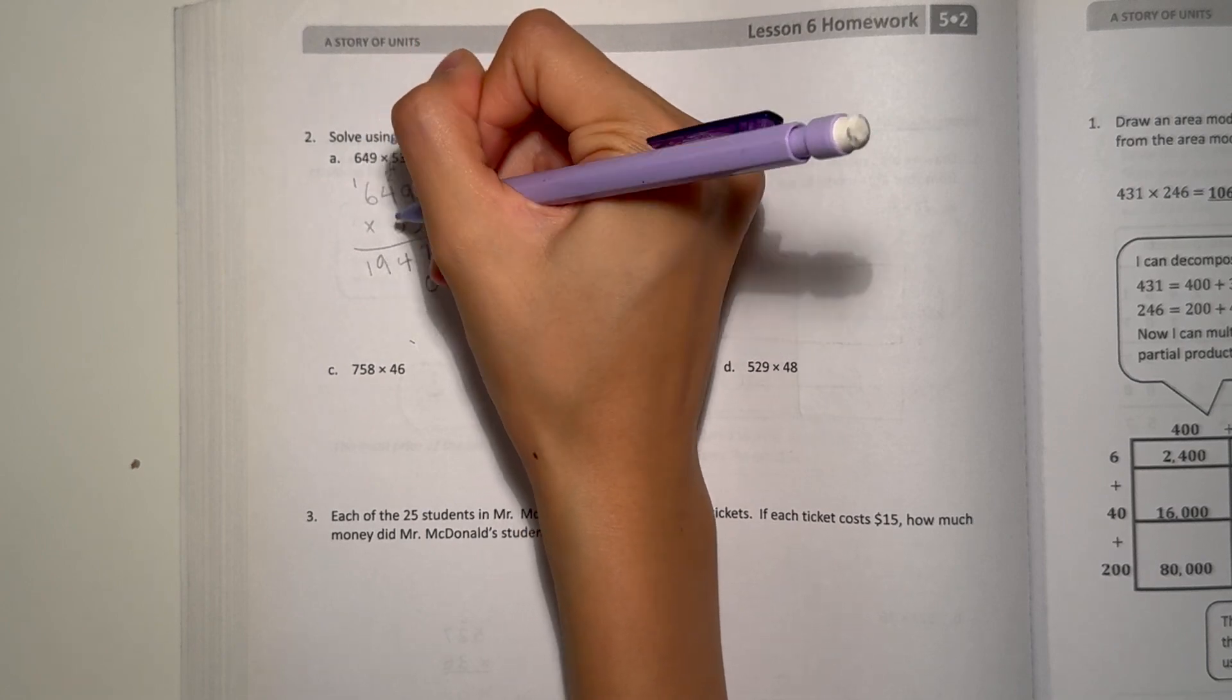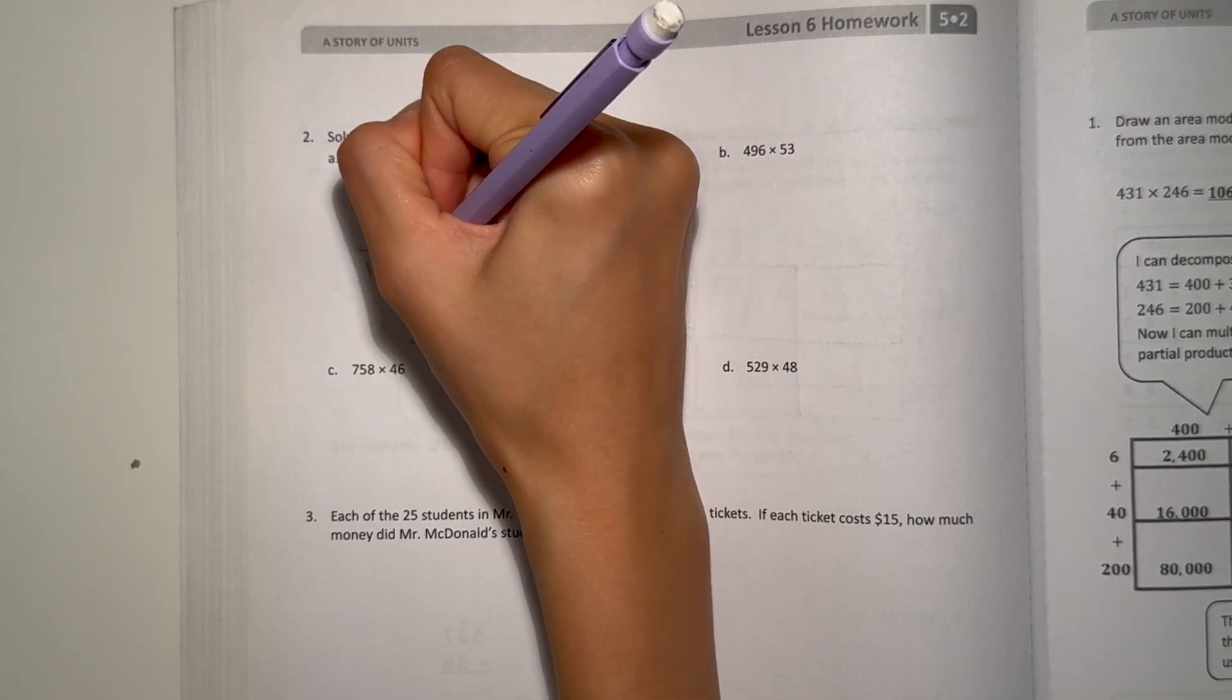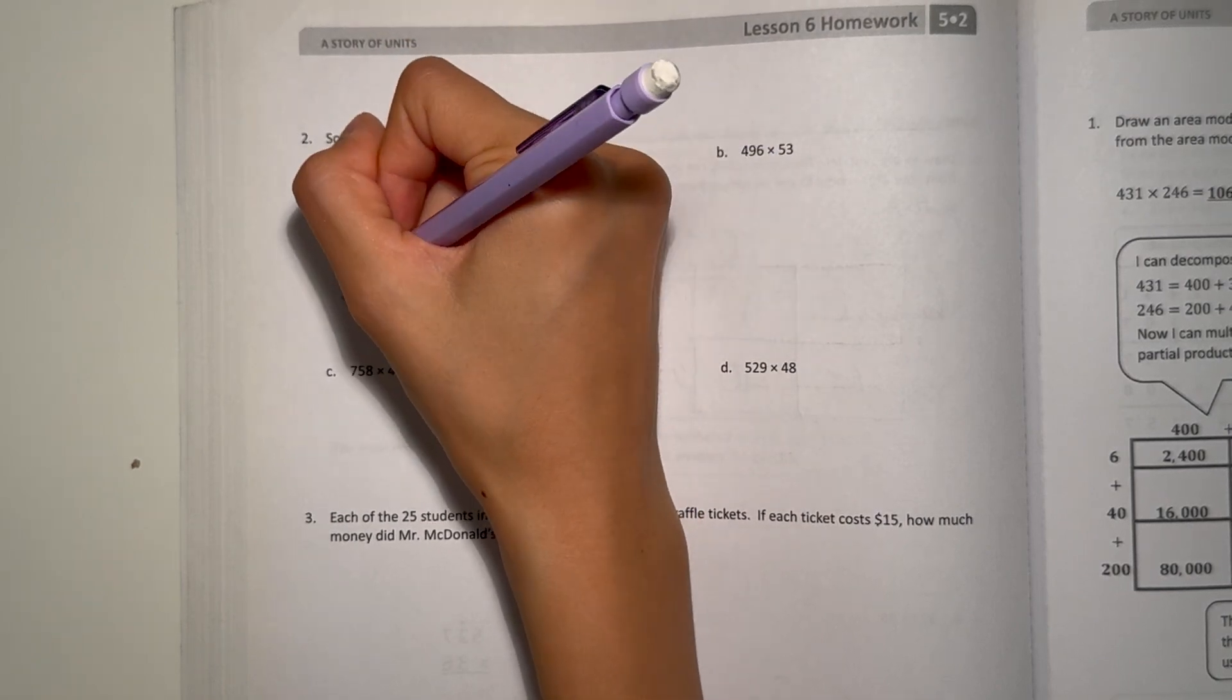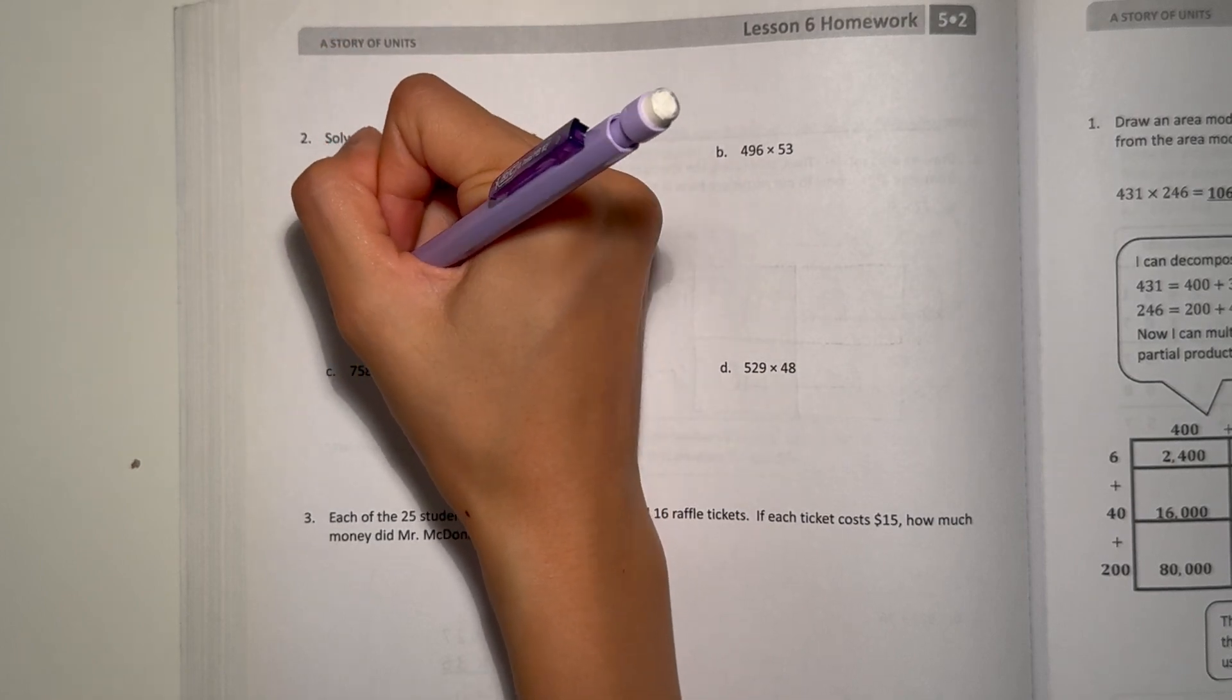Now add a 0 at the end. 9 times 5 is 45. 4 times 5 is 20. Plus 4 is 24. And 6 times 5 is 30. Plus 2 is 32. Let's add.